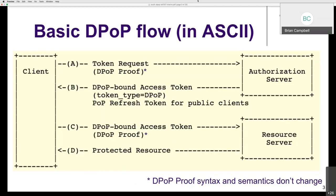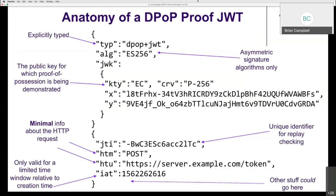What's unique about DPoP is this concept of a DPoP proof, sent using the same syntax and semantics both to the authorization server on the token request and in conjunction with the access token on resource server access. It travels in an independent header. The DPoP-bound access token is returned, and the refresh token may also be bound — but only for public clients.